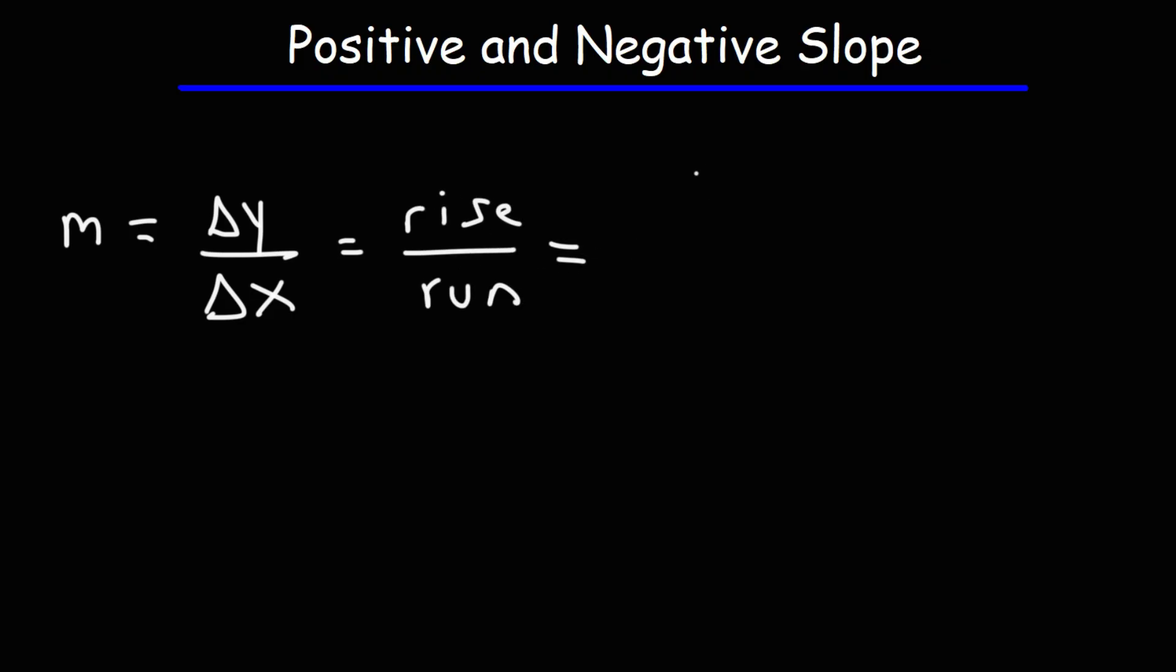In algebra, you've learned it as this formula. You can calculate the slope between two points using the formula y2 minus y1 over x2 minus x1.